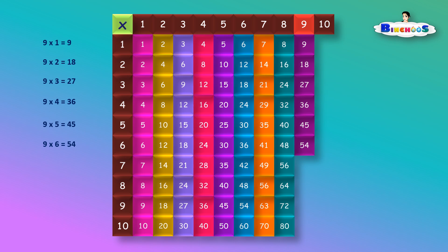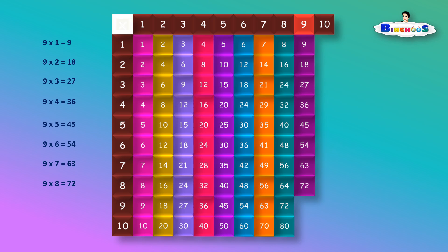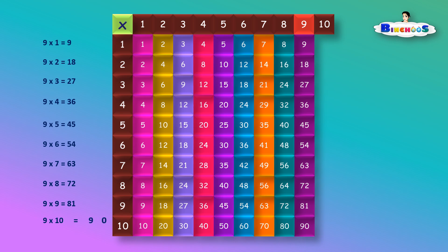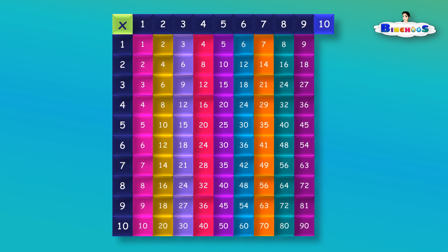9 times 6 is equal to 54. 9 times 7 is equal to 63. 9 times 8 is equal to 72. 9 times 9 is equal to 81. 9 times 10 is equal to 90. Multiplication of 10.